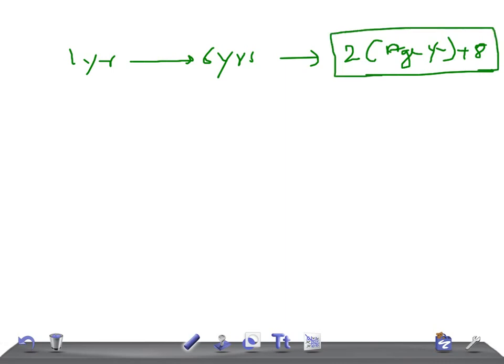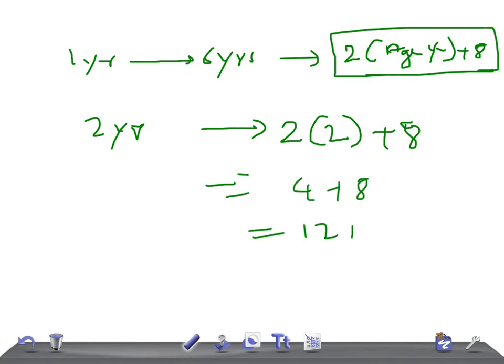From one year to six years of age, you calculate as 2 times age in years plus 8. For example, if there's a two year old, it's 2 times 2 plus 8, which equals 4 plus 8, giving you 12 kg. The baby should be at least 12 kg.